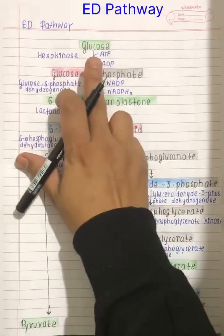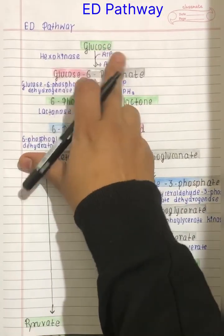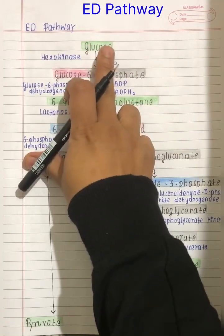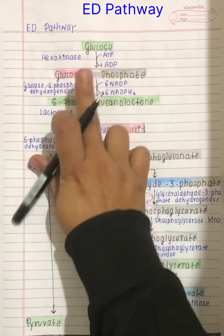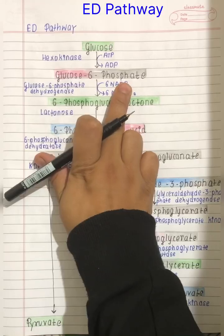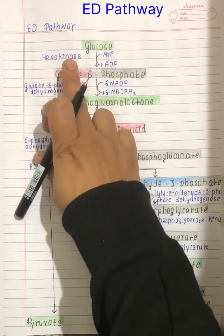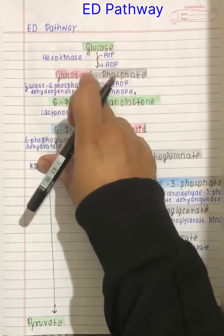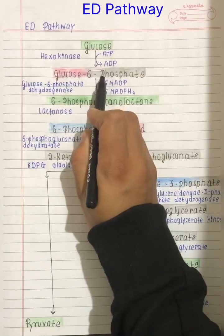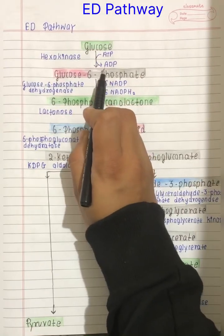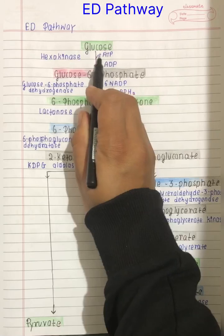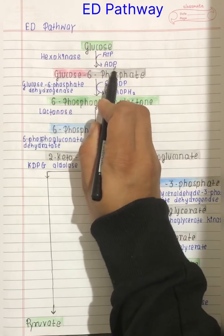We will start with the explanation of the ED pathway. The first step is phosphorylation, where glucose is converted into glucose-6-phosphate by hexokinase enzyme. This reaction is irreversible and requires ATP, which is converted into ADP.